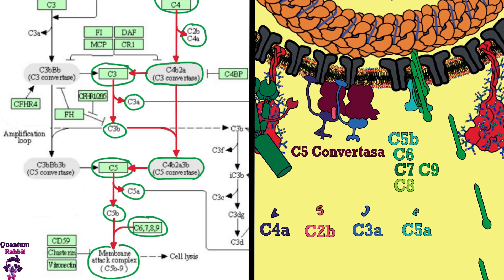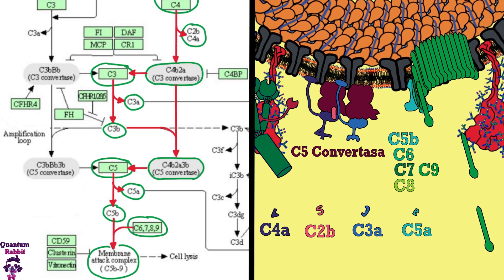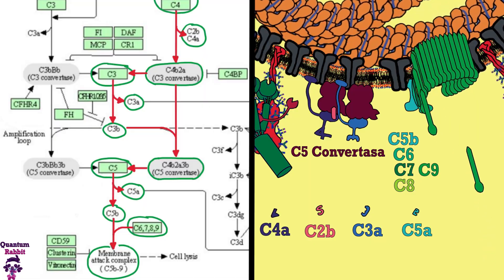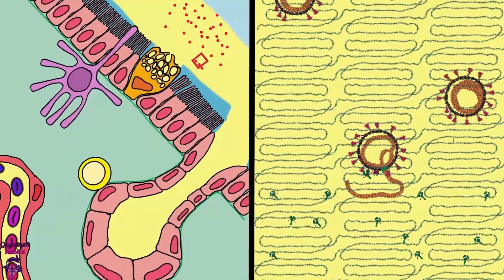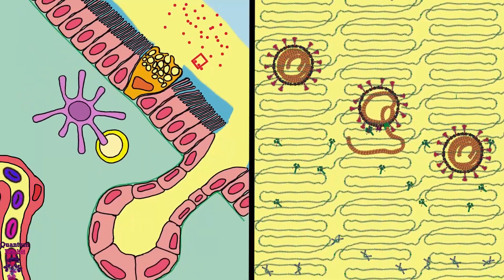This complex begins to insert C9 proteins into the membrane and forms a pore that destroys the permeability of the membrane, and the virion is destroyed until death. However, some virions outlive the mucus defenses and continue.